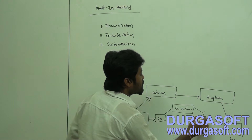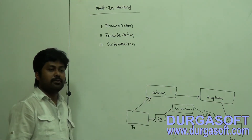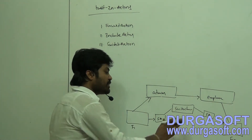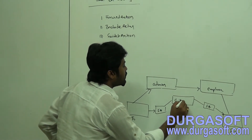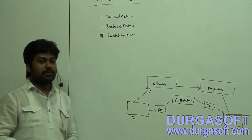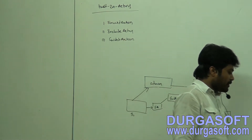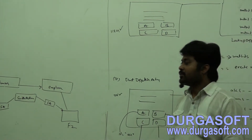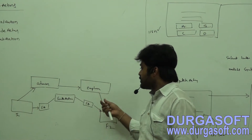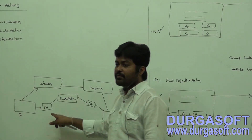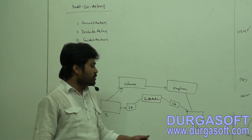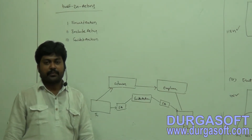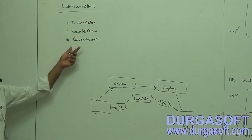Switch Action then redirects to another Forward Action in the target module. Between two modules, we need to use Switch Action — it acts like a router between modules. Using Forward Action directly to map to another module page cannot invoke it; through Switch Action only we can invoke it.